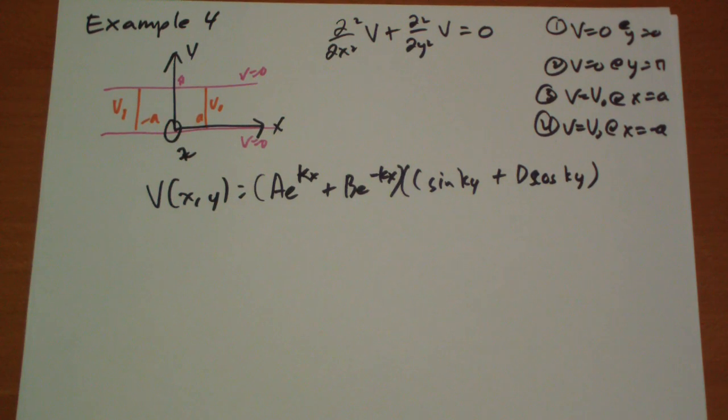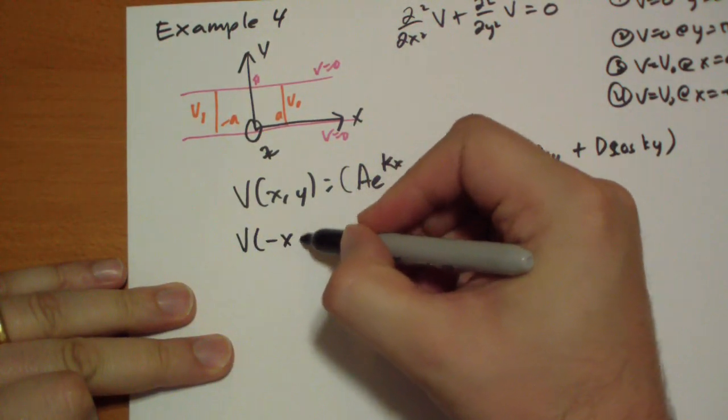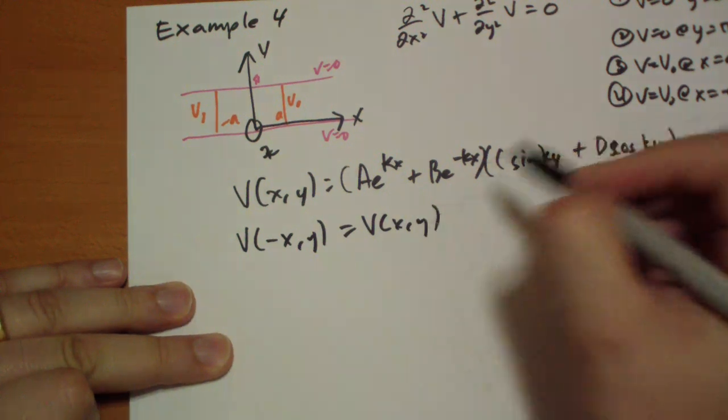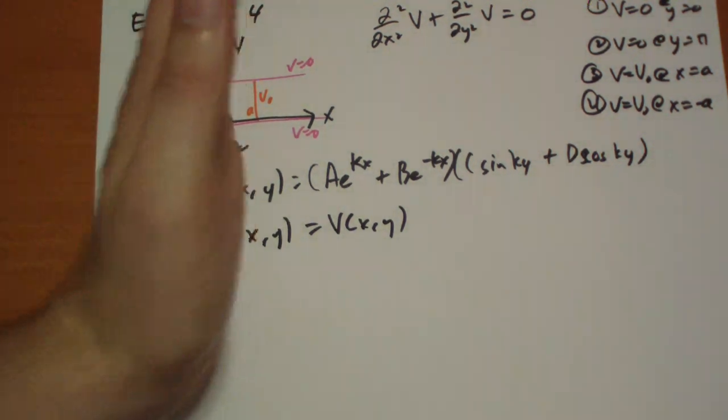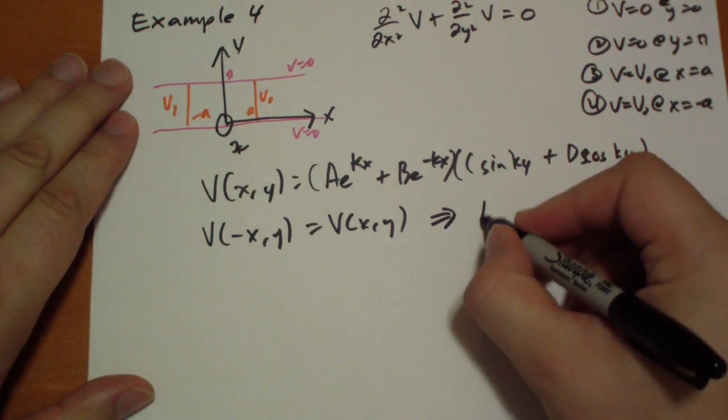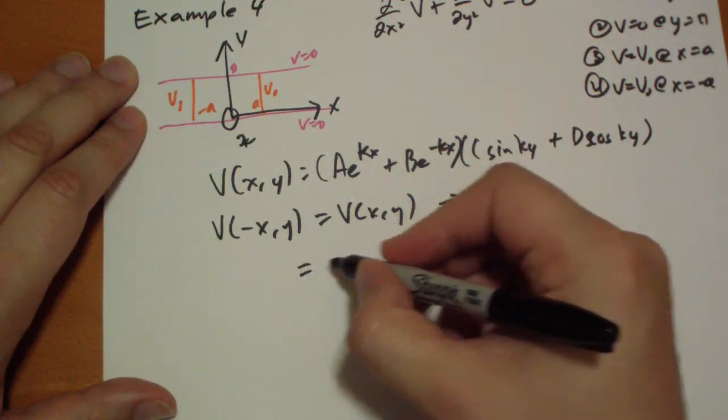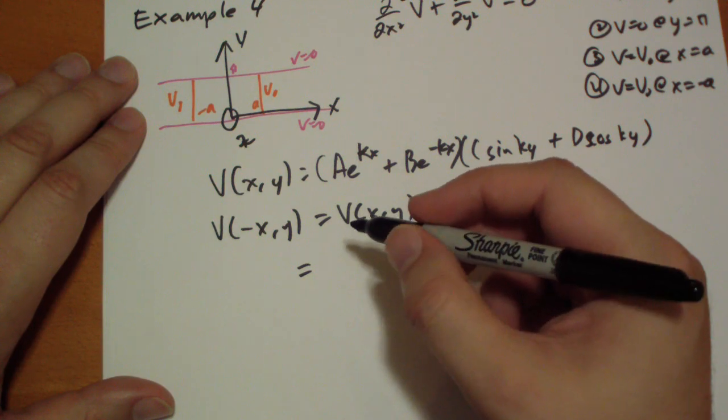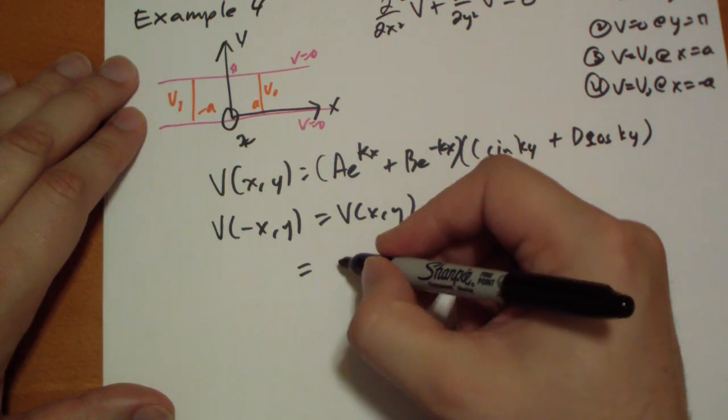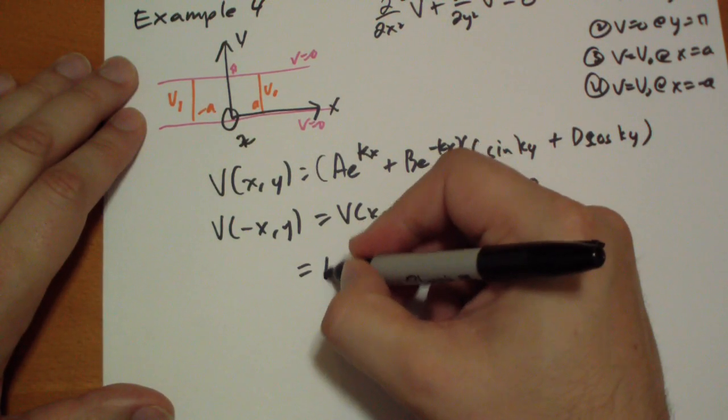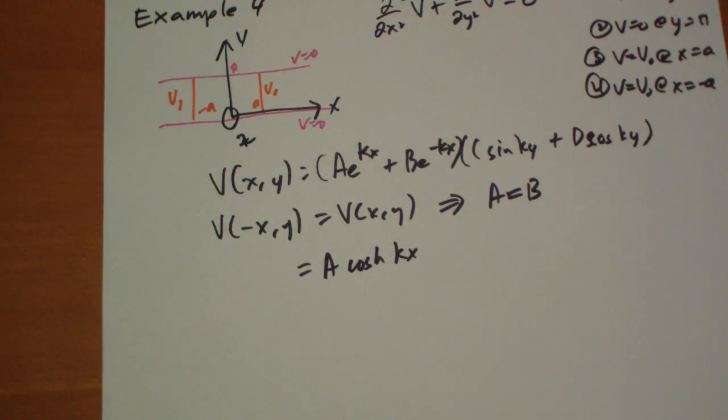But we do have the interesting property that the potential basically, there's a mirror going along the yz plane there. Because, you know, symmetry. You can't, if you were to flip it, you couldn't tell that the problem was flipped. And so the solution must behave the same way. And so that implies that your A and B, that leads us to believe that the A is equal to the B. And so we can rewrite this part as, let's just write it as some constant cosh of kx.